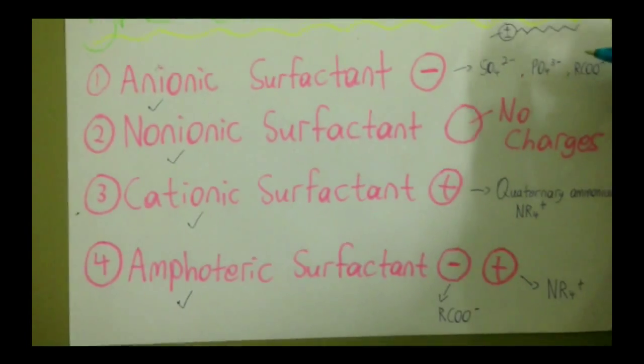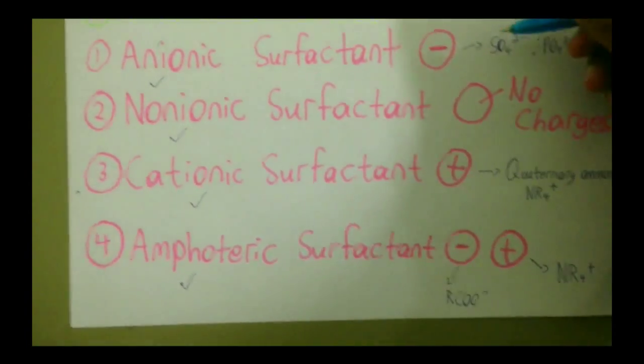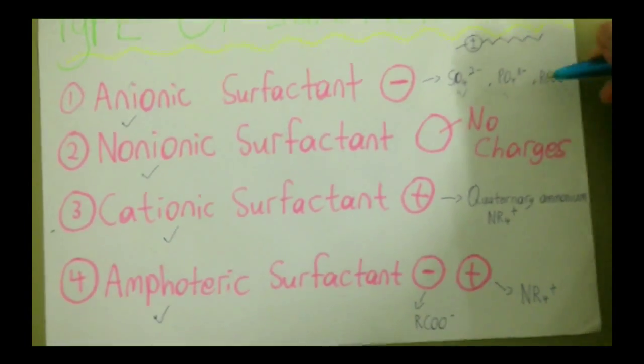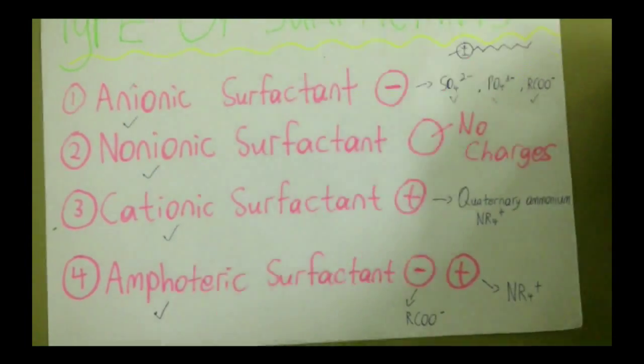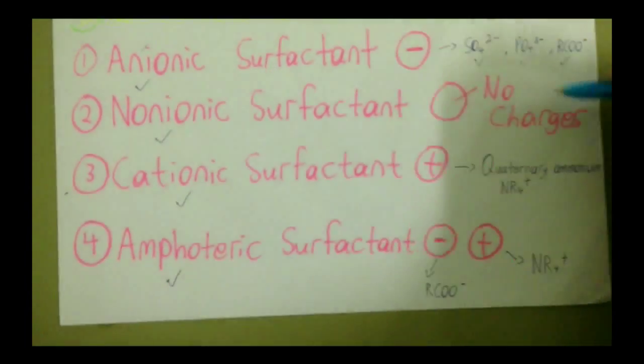The anionic surfactant is negatively charged that consists of sulphate, phosphate and carboxylate ions. The non-ionic surfactant does not dissolve in aqueous solution because there is no charges.